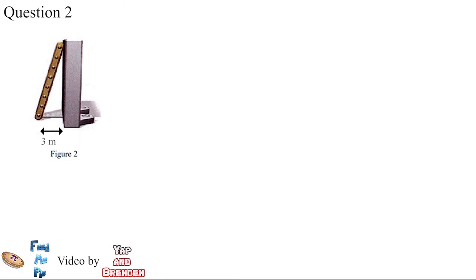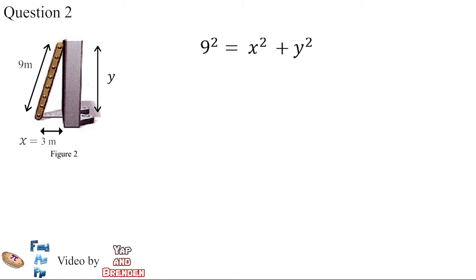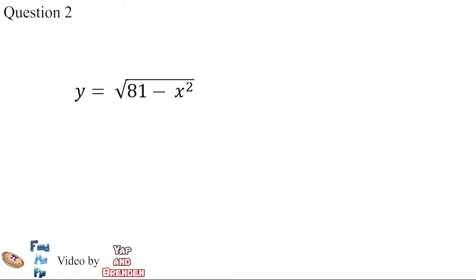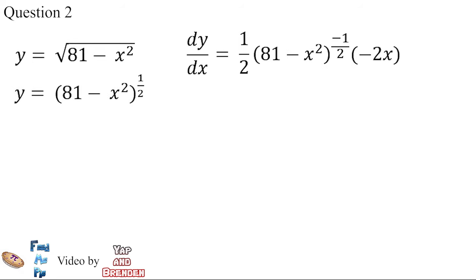From the question we know that the ladder is 3 meters away from the wall and the length of the ladder is 9 meters. We let Y equal the height on the wall and X equal 3 meters. By using the Pythagorean theorem, 9² equals X² plus Y². By solving the equation we can get Y equals the square root of 81 minus X².